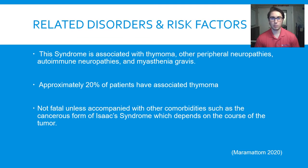Now we're going to talk about related disorders and risk factors. This syndrome is typically accompanied by thymoma, peripheral neuropathies, autoimmune neuropathies, and most commonly myasthenia gravis, which has very similar symptoms to Isaac's syndrome. Roughly 20% of patients have an associated thymoma, which is believed to cause the overproduction of antibodies. The peripheral nerve hyperexcitability can be reversed if this tumor is removed. This syndrome itself is typically not fatal unless it is accompanied by a tumor, and it also depends on the course of that tumor.